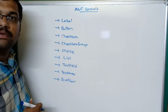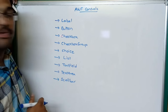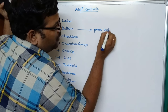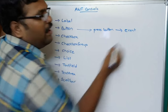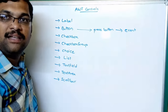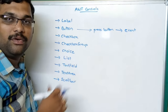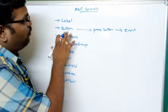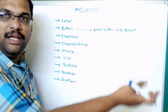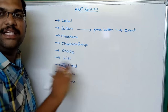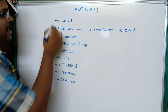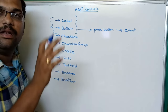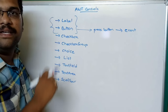With these AWT controls we can also handle the events that occur. For example, if you consider a button, if you press the button an event will occur, and that event will be handled by the corresponding listener interface, which we have discussed in the previous session. Whatever event is occurred by using these controls, the corresponding event listener interface will be responsible for handling all these events. In this session let us look at two AWT controls: how to create a Label, how to create a Button, how to make them visible on an applet, and how to handle their events.